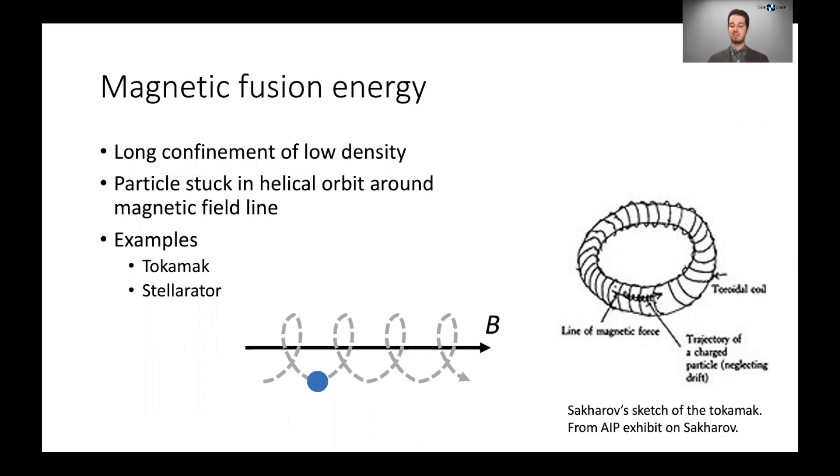This idea has been around for a long time since the 1950s. Here you can see Andrei Sakharov, a famous physicist and human rights pioneer, initial sketch where he proposed a tokamak. You can see the particle stuck on its helical trajectory around the magnetic field line, and these field lines wrapped around on their ends to form a closed loop.